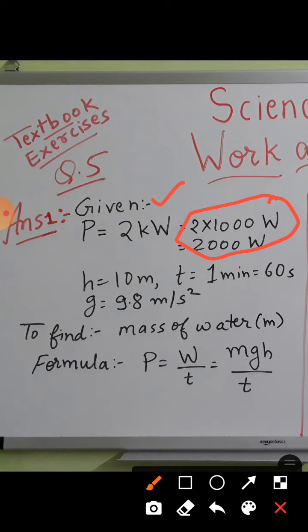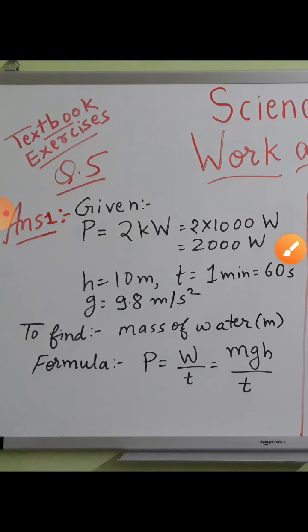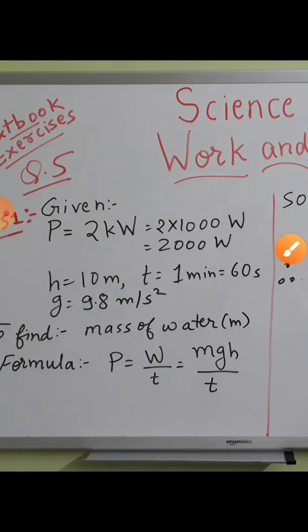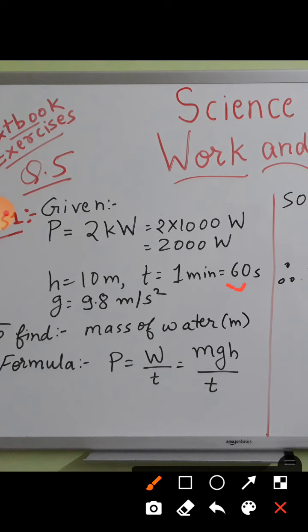Now power is two thousand watts. Height is given in meters which is already correct because SI unit of length is meter. Time: SI unit of time is second, so time is given in minutes. Convert minute to second by multiplying by 60, so one minute equals 60 seconds.